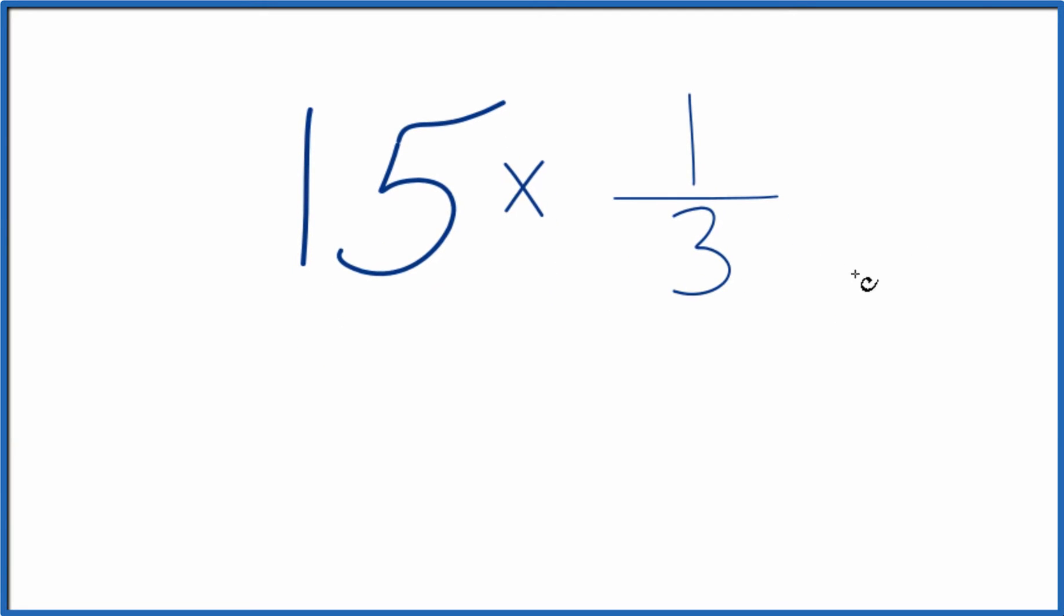Another way to do it, probably easier, is to take 15 and consider that to be 15 over 1. Since we're just dividing by 1, it's still 15.